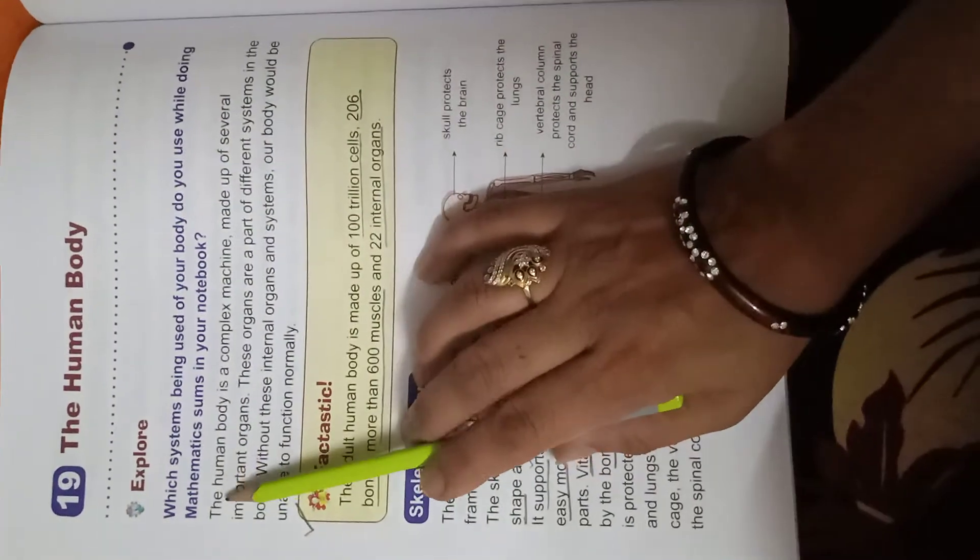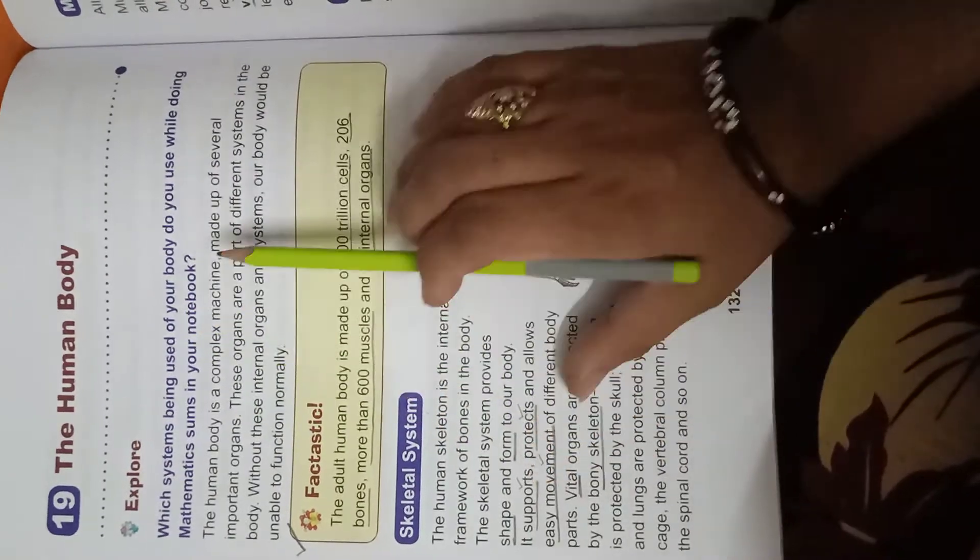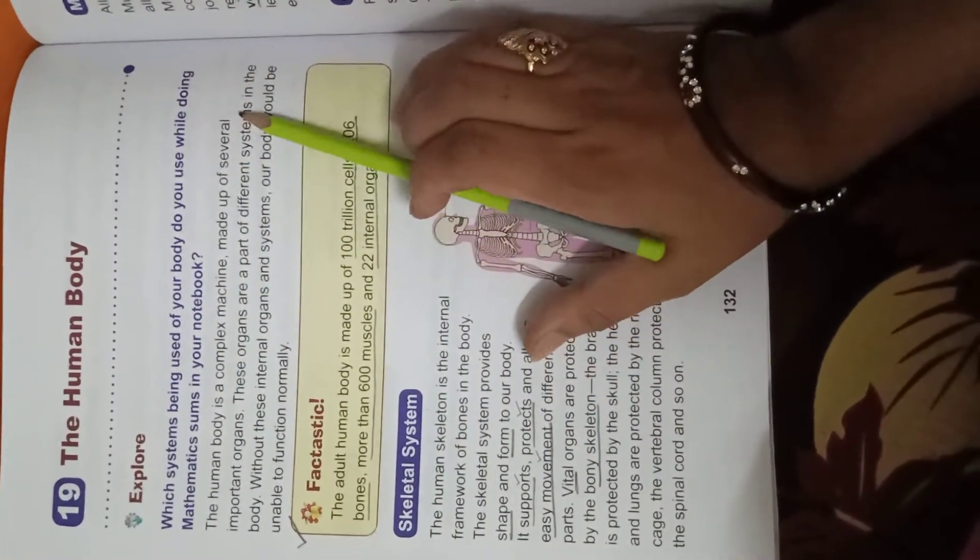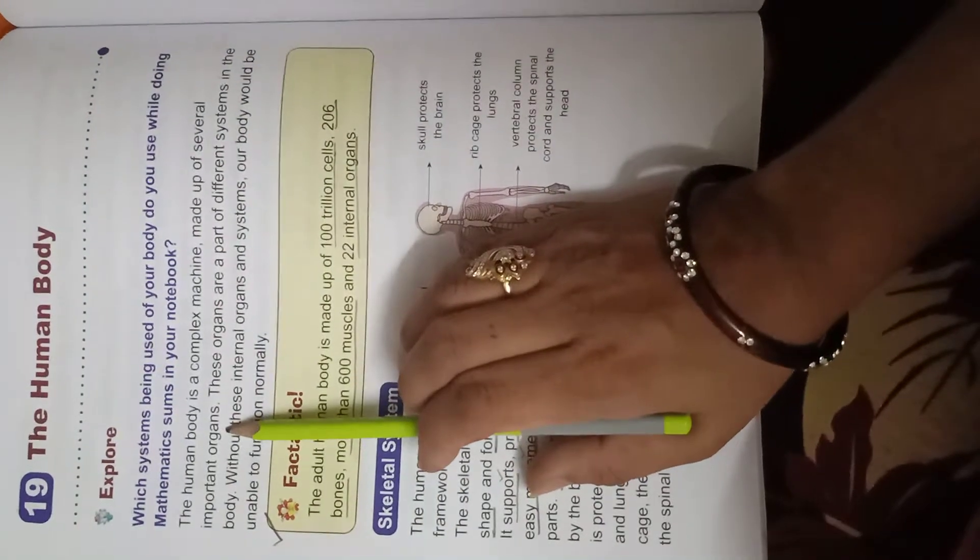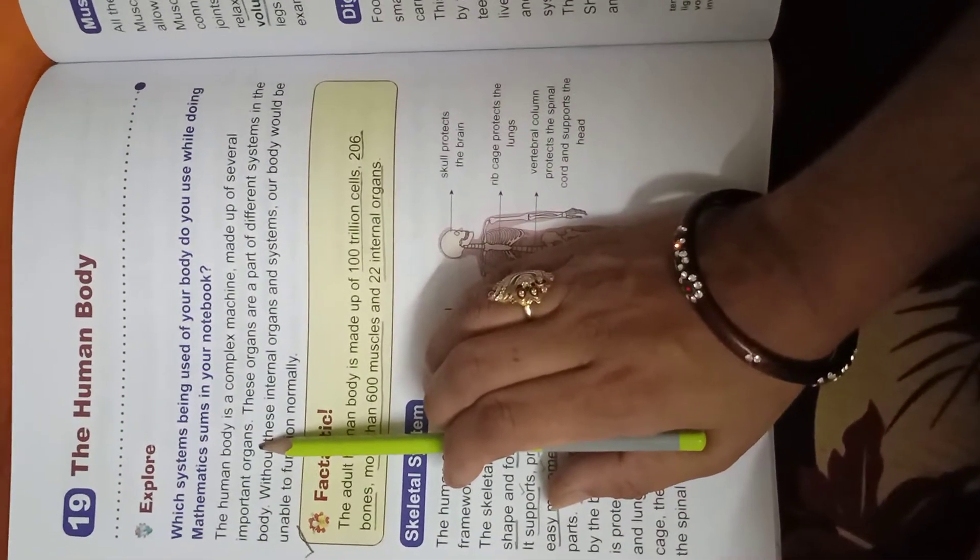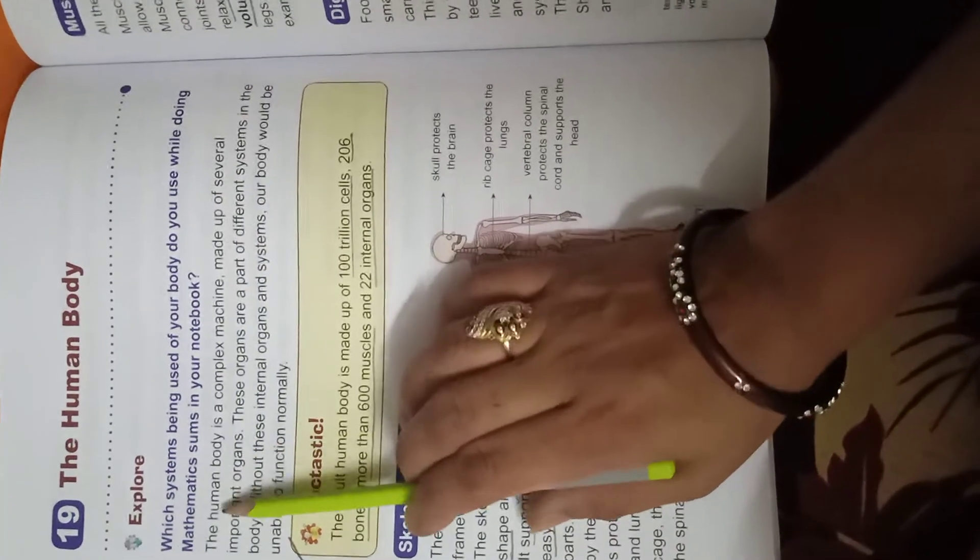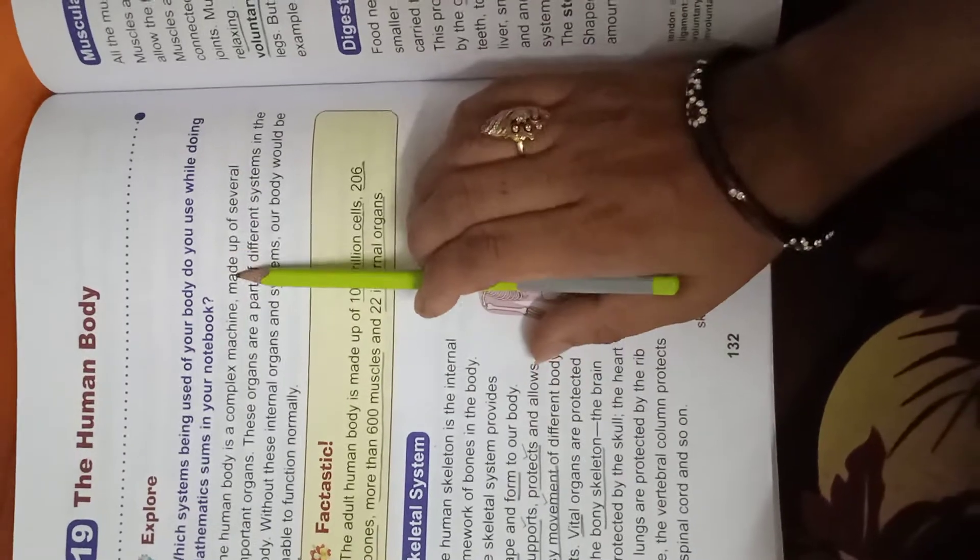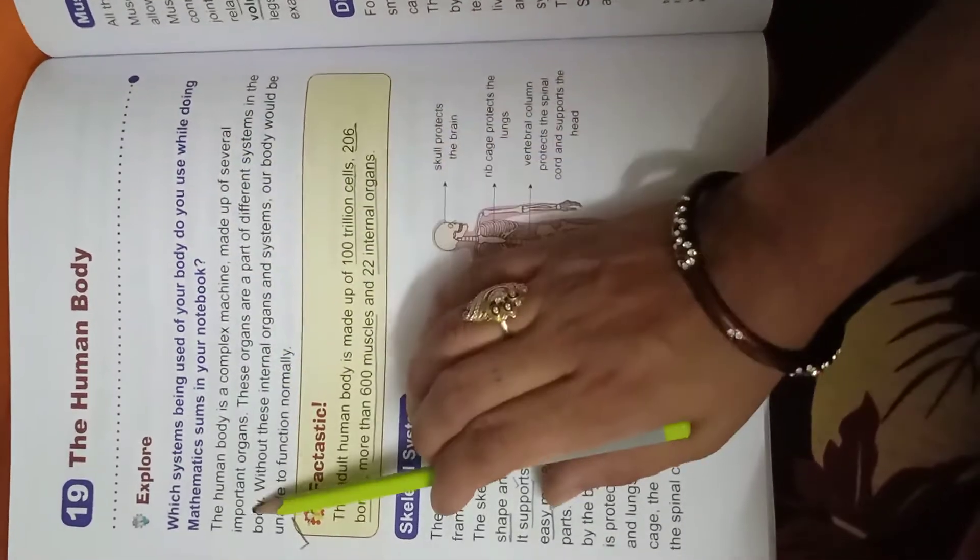Now, the human body is a complex machine made up of several important organs. Students, repeat after me: The human body is a complex machine made up of several important organs.